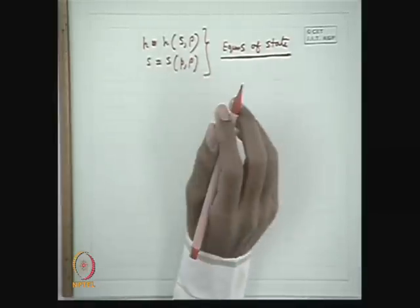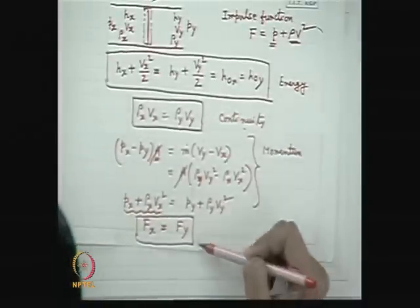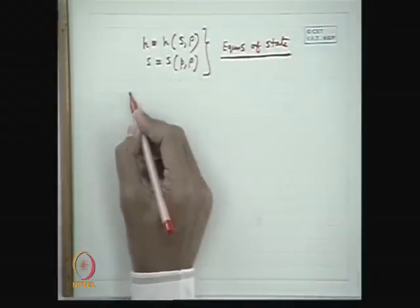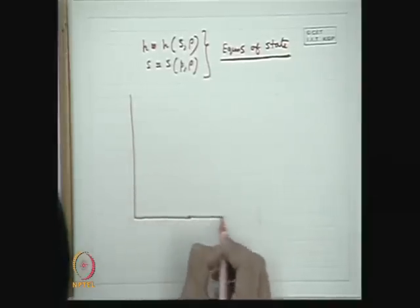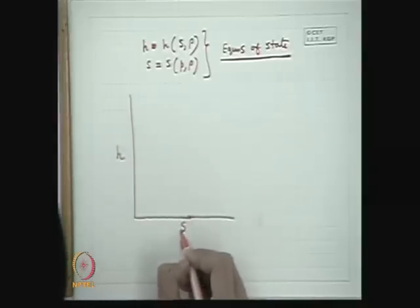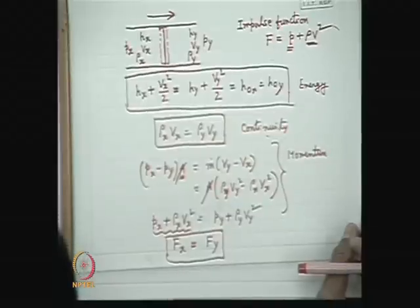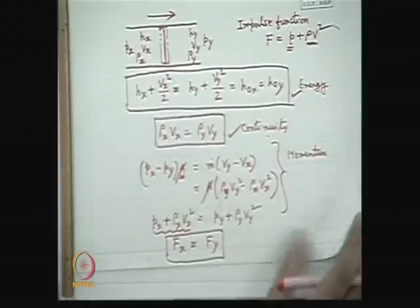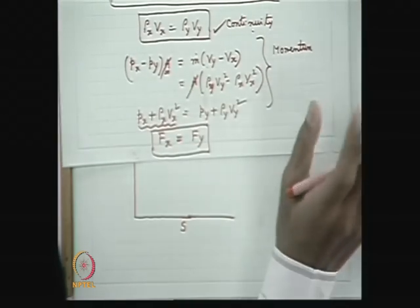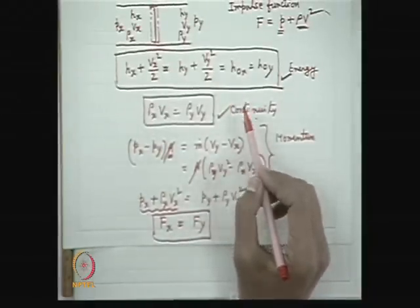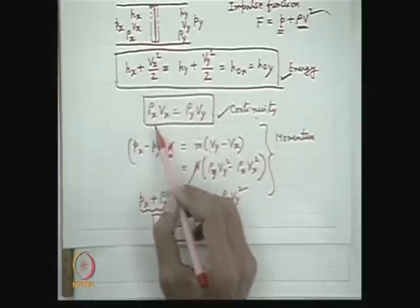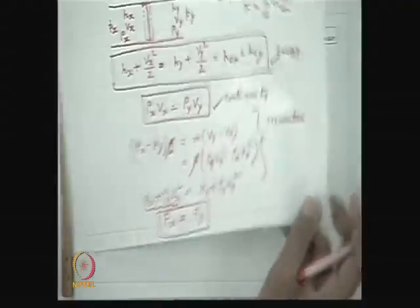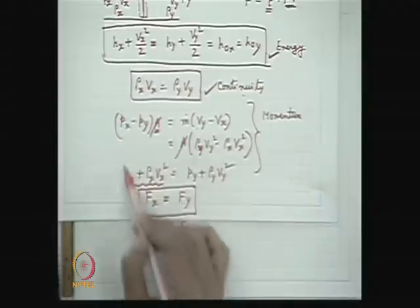Using the energy equation, continuity equation, momentum equation, and the equation of state, we want to find the locus of points in the h-S plane which satisfy these equations. The physical motivation is this: for a given state at the upstream, is there a unique state accessible through shock, or are multiple states possible? The answer is no — there is a unique state corresponding to a given upstream state that can be achieved through shock. To show this, we first find the locus of all points in the H-S plane which correspond to the same stagnation enthalpy, satisfying continuity and the equation of state — but not yet the momentum equation.